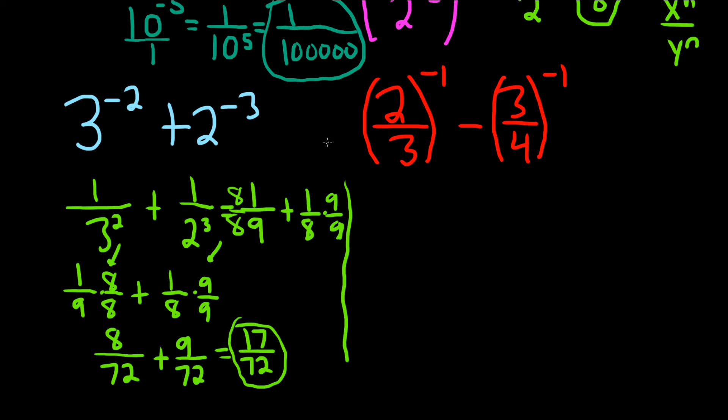This one here, we're going to take a different approach. Whenever you have something to the negative 1 power, it's just 1 over that number. So you're basically just flipping it. So like if you had x to the negative 1, you would just get 1 over x. So if you have x over y to the negative 1, you just flip both. It's just y over x.